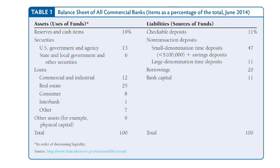Borrowings represent 20% and bank capital 11%. On the assets side, reserves and cash items represent 19%. Securities total 19%: 13% for US government agency securities and 6% for state and local government. Loans are divided between commercial and industrial at 12%, real estate 25%, consumer 8%, interbank loans 1%, others 7%. Other assets represent 9%. The total is 100%.